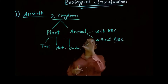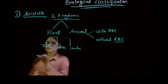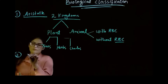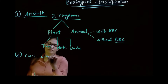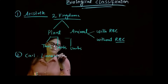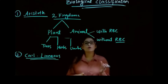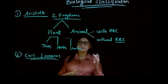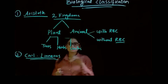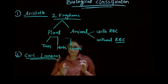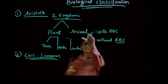After that, the second scientist we have is Carolus Linnaeus. Carolus Linnaeus is also known as the father of taxonomy. As we discussed, Aristotle is known as the father of biology, while Carolus Linnaeus is known as the father of taxonomy. According to him, he gave the same idea about the two kingdom system.